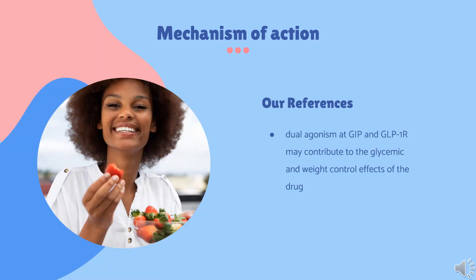Mechanism of Action: Glucagon-like peptide-1 (GLP-1) receptors (GLP-1R) are expressed throughout the body, including pancreatic beta cells and the gastrointestinal tract. They have been implicated in the pathophysiology of type 2 diabetes mellitus, as GLP-1R signaling is involved in glucose control by enhancing glucose-stimulated insulin secretion, delaying gastric transit, decreasing plasma glucagon levels, and reducing body weight by activating anorexogenic pathways in the brain.